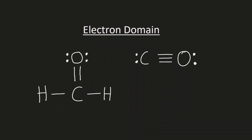An electron domain is a region where an electron pair is located. A single bond, which is a single line on the Lewis structure, is an electron domain. A double bond, which is two lines on the Lewis structure, is an electron domain. And a triple bond, which is three lines, is an electron domain.